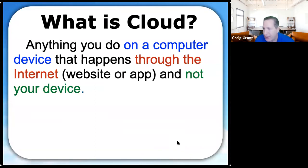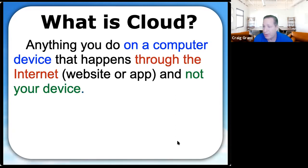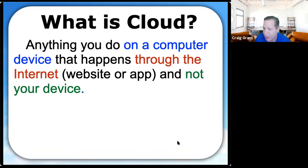All the cloud really is, is anything you do on a computer device — which could be your phone — that utilizes the internet connection instead of your device. So instead of installing software, it's a website or an app that's connected to the internet. That's all the cloud really is. Back 15 years ago, to use Microsoft Office you had to buy a whole disk set and install it onto one computer, and you had to be on that same computer every single time. Now with Office 365, you can do it on every device, not just one.